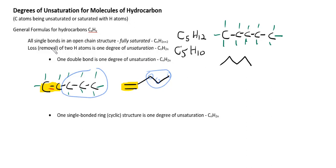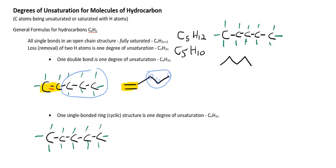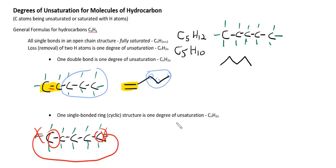A degree of unsaturation could also be introduced to the fully saturated molecule by creating a ring structure. I'm going to redraw the Lewis structure and show you that. Starting with the fully saturated hydrocarbon, I'll draw a cyclic structure by connecting the ends of this straight chain hydrocarbon — connecting this carbon to the other end with a single bond. To do that I draw a long loopy line, but in doing so I need to sacrifice 2 hydrogens. The correct way to draw a 5-membered hydrocarbon cyclic structure is to give it a more geometrical shape — in this case it looks like a pentagon.